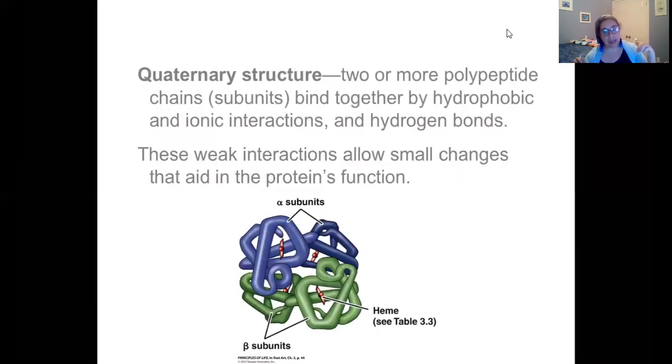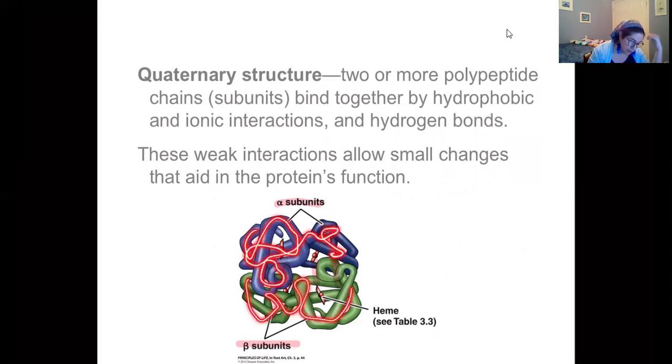Quaternary structure is the last level of protein folding. This is when two or more separate chains come together and interact. Very, very weak forces, but still holding it together to form your functional protein. So this right here is an example of hemoglobin. You can see that it's got two different sections, what are called your alpha and your beta units, and they are coming together and interacting and holding together, but they are different chains. So this right here is one chain. This blue is one chain. This green is a different polypeptide chain, but they're interacting together and that forms that quaternary structure.